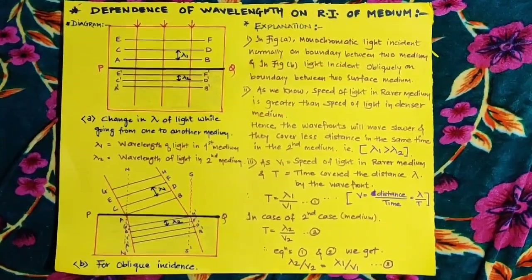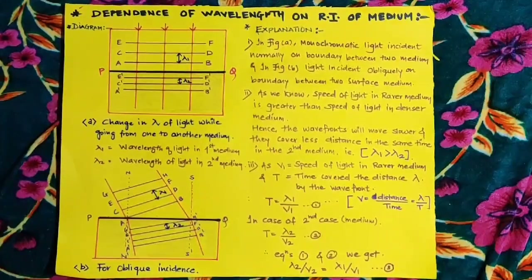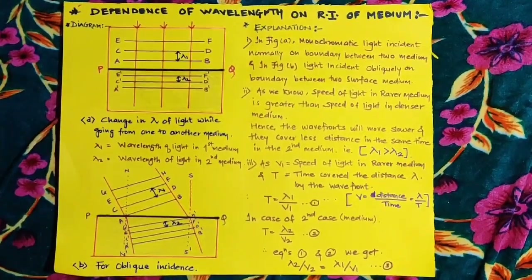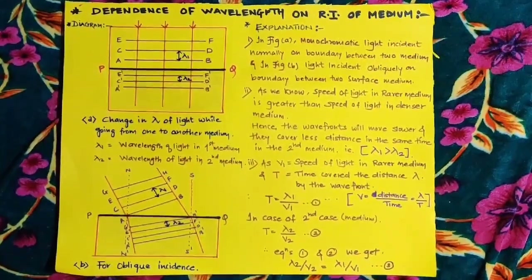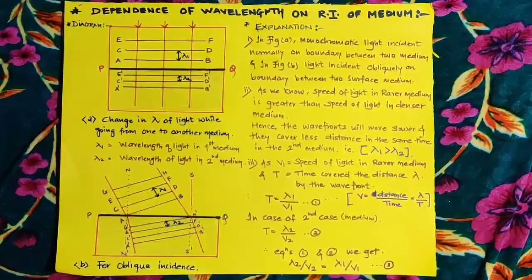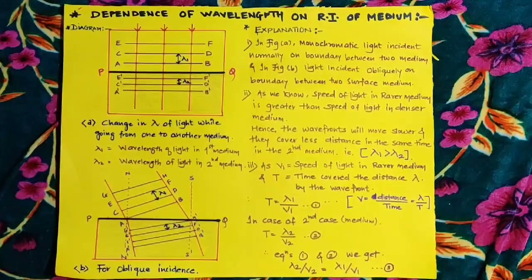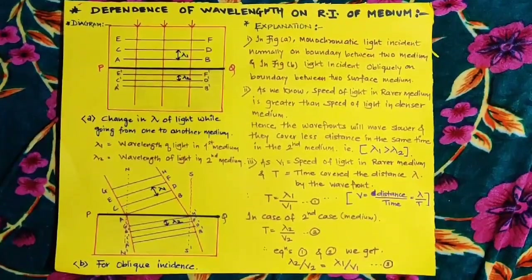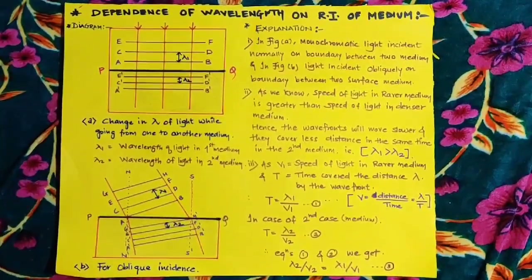This is the subtopic of the previous topic: dependence of wavelength on the refractive index of a given medium. In the earlier topic, we found the relation n1 sin i = n2 sin r, which relates the refractive index, angle of incidence, and angle of refraction. In this topic, we discuss the dependence of wavelength — the length of one wave, denoted by lambda — on the refractive index of the given medium.